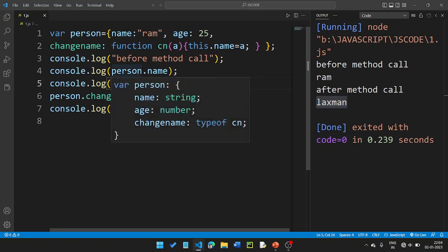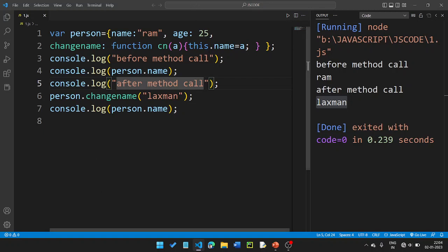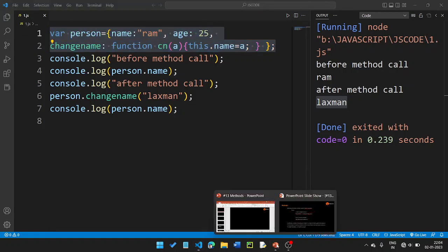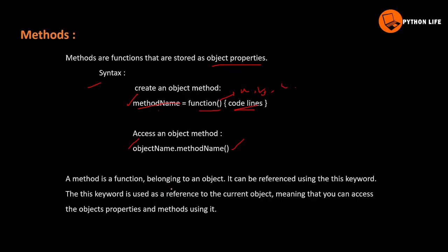This method is used like object constructors. A method is a function belonging to an object. The 'this' keyword is used to reference the current object, so you can access the object's properties and methods. Using this.changeName, you can call the method and it will update the property on the current object.